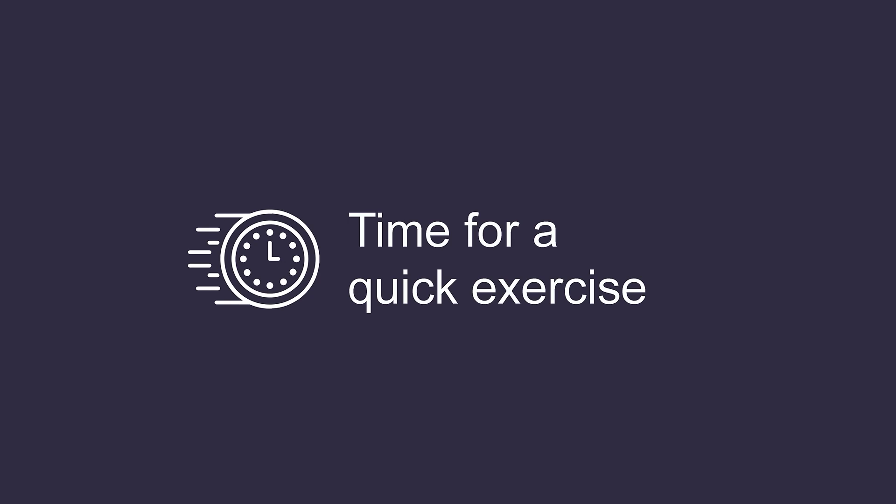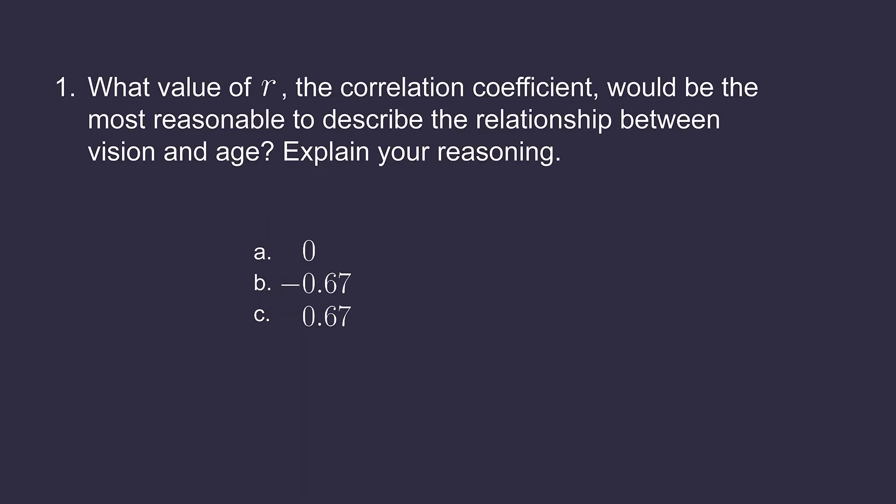Let's test what we've learned today about statistical correlation by doing two quick exercises. Question 1. What value of r, the correlation coefficient, would be the most reasonable to describe the relationship between vision and age? Explain your reasoning. Answer choice A, 0. Answer choice B, negative 0.67. Answer choice C, 0.67.